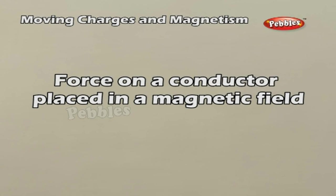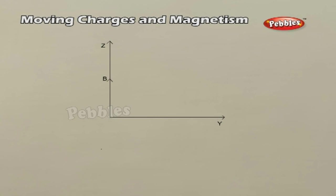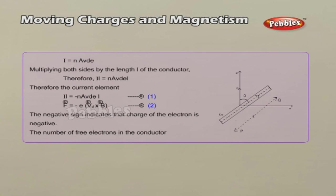Force on a conductor placed in a magnetic field. Consider conductor PQ of length L and area of cross-section A, placed in a uniform magnetic field of induction B making an angle θ. A current I flows along PQ; hence the electrons are drifted along QP with drift velocity Vd. If N is the number of free electrons per unit volume, then the current is shown above. The negative sign indicates the direction of current is opposite to the direction of drift velocity of the electrons. Since the electrons move under the influence of the magnetic field, the magnetic Lorentz force on a moving electron gives the total force on the current-carrying conductor placed in the magnetic field.